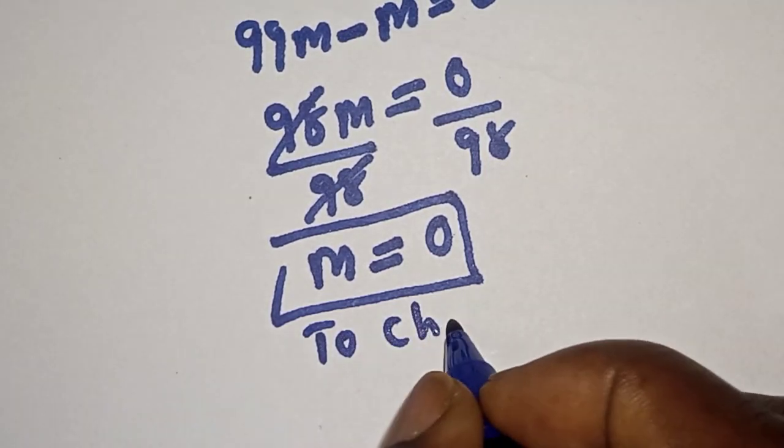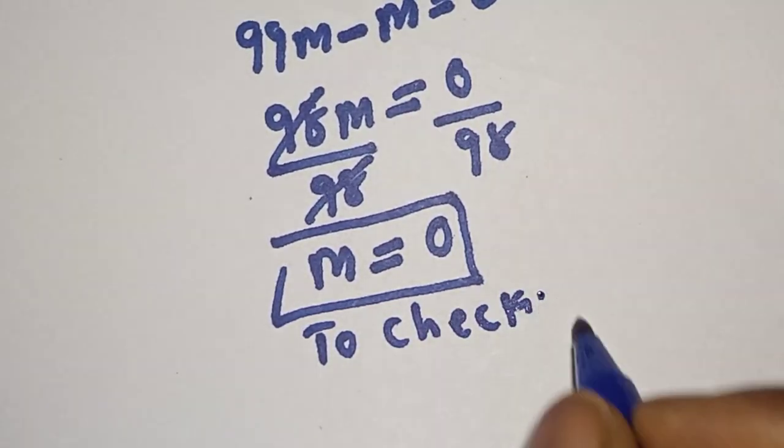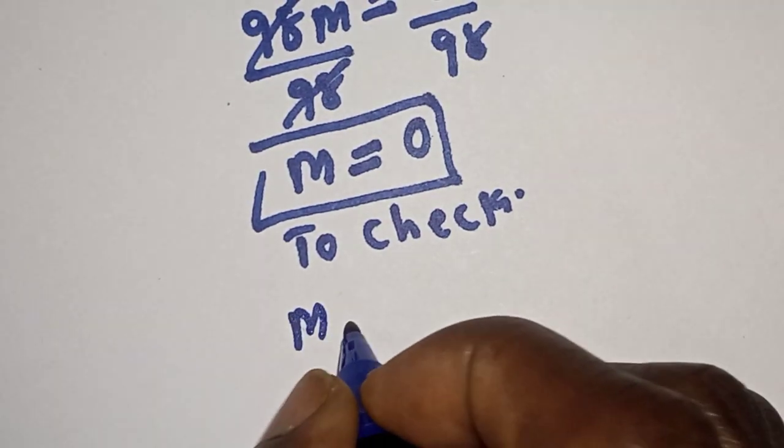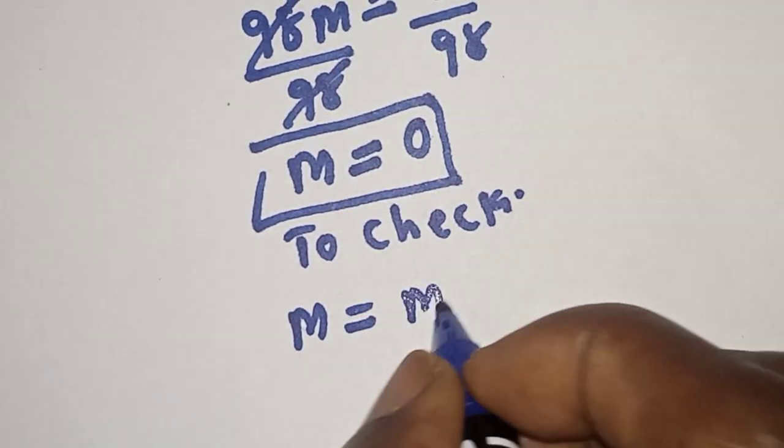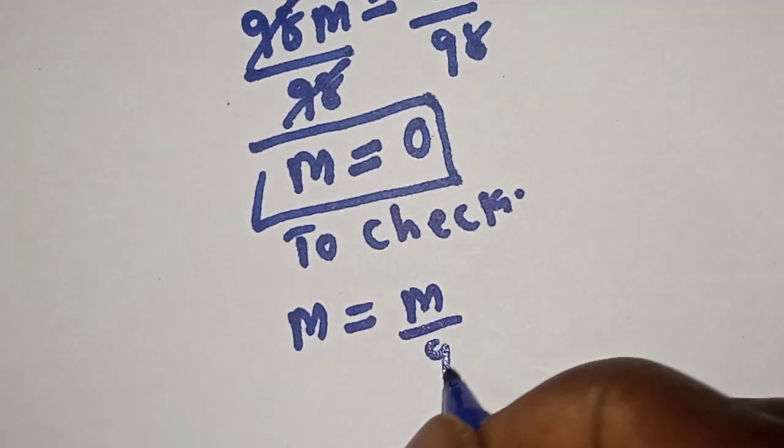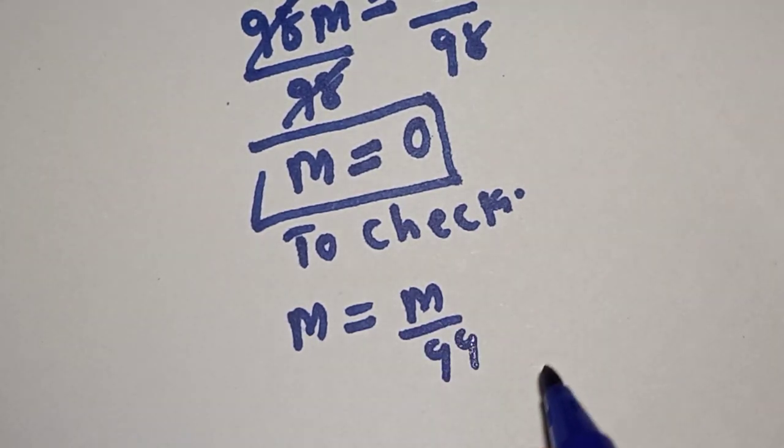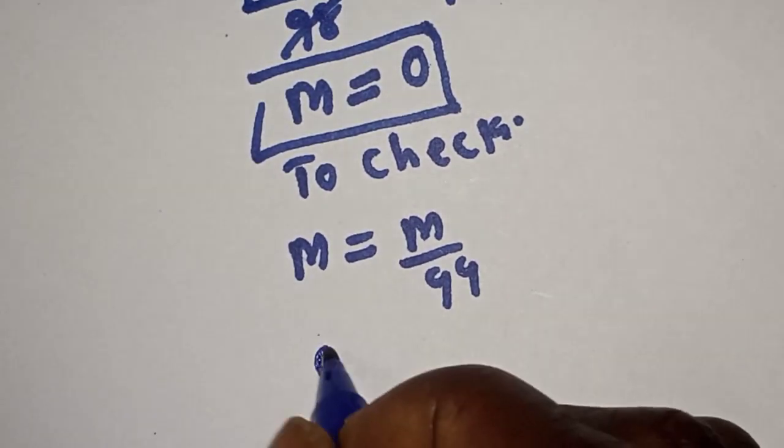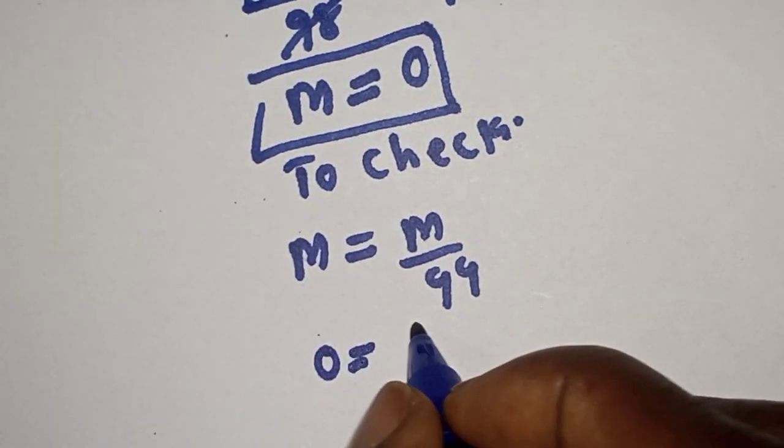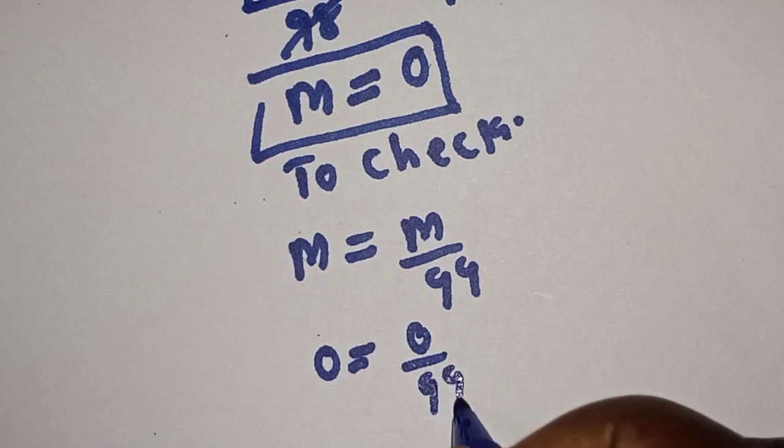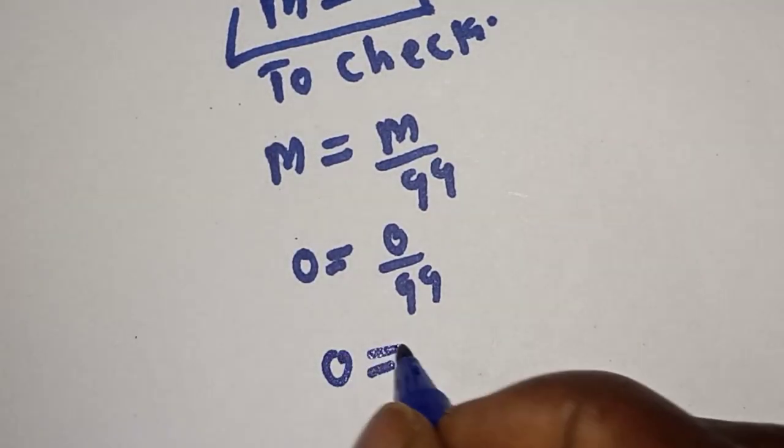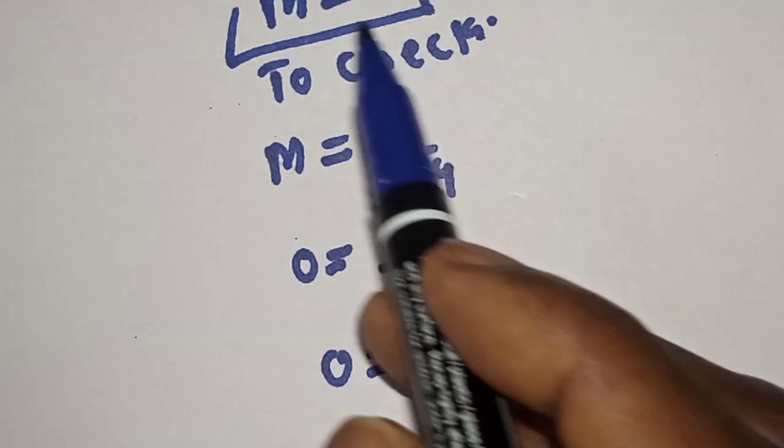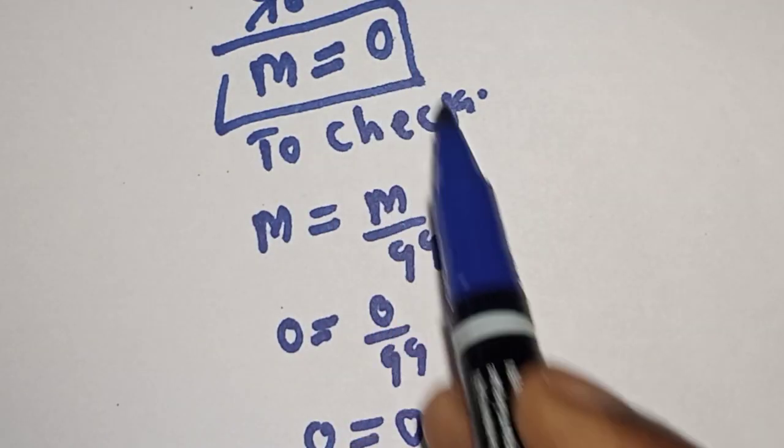To check, we substitute into the given equation: M equals M over 99, or 0 equals 0 over 99. Therefore, 0 equals 0. We satisfy the given equation when M equals 0.